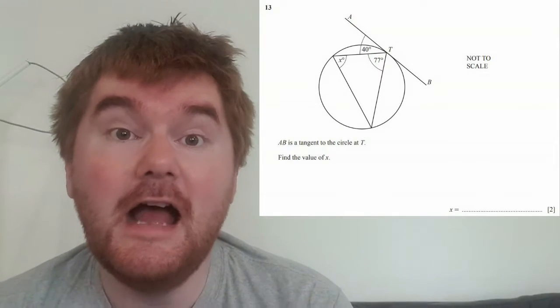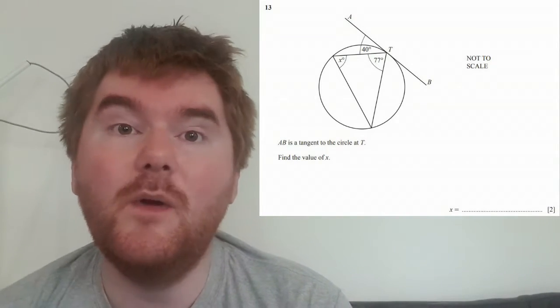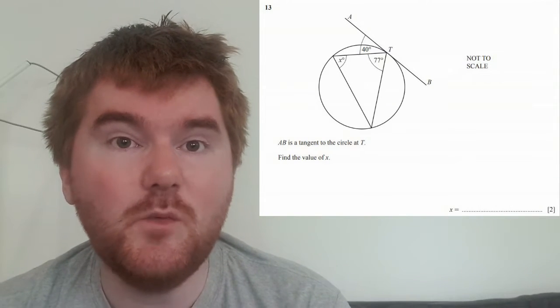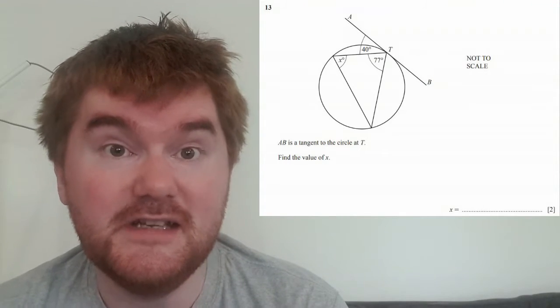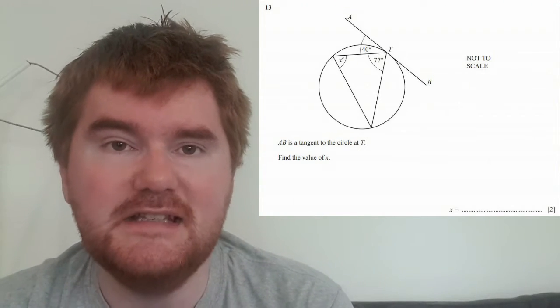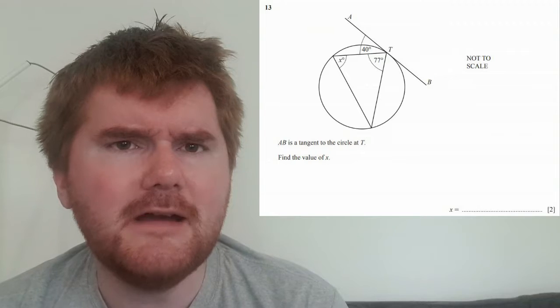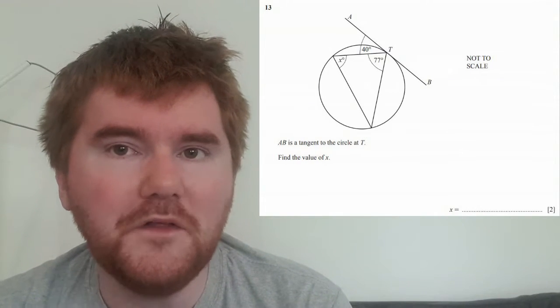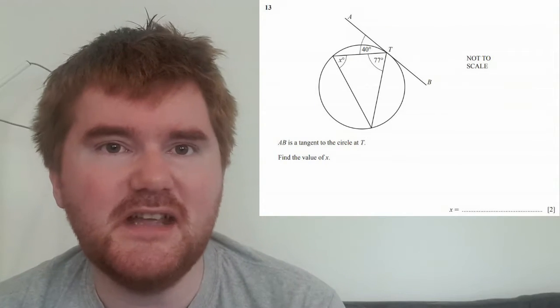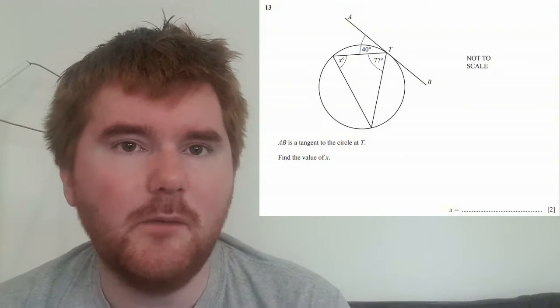The first question I want to go through is a circle theorem question. You can see the question here - we've got an angle of 40 degrees, an angle of 77 degrees, and you can actually work out the angle on the straight line which would be 63 degrees using angles on a straight line make 180 degrees. It's very likely that the angle you need to find is going to be one of those numbers - either 40, 77, or 63 in some way.